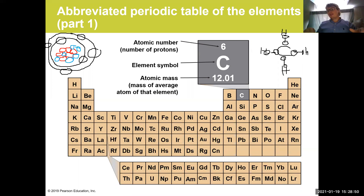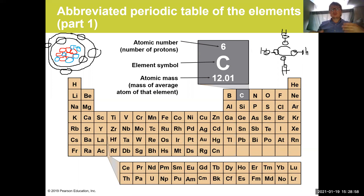Keep that in mind when we talk about how bonds are formed — covalent bonds and ionic bonds — because this is really what's driving the number of bonds that an atom can make.